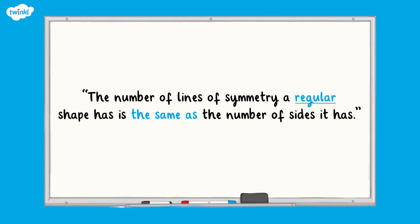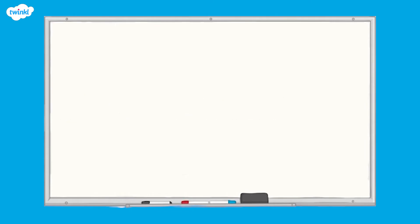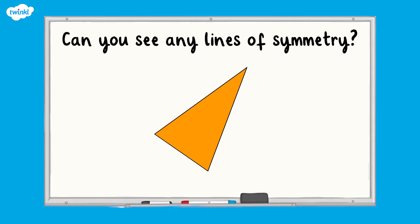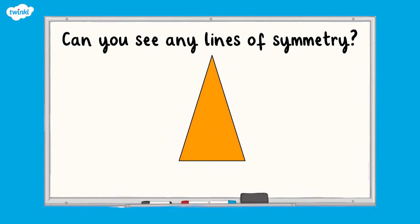Sometimes lines of symmetry may be tricky to spot in a shape as the shape itself is drawn in an unusual way. Take a look at this triangle — can you see any lines of symmetry? It's the same isosceles triangle from earlier in this video; the only difference is that it has been rotated. When we rotate it back to the same position as before, we can more easily see that it has a vertical line of symmetry. Top tip: sometimes you may need to rotate shapes when looking for lines of symmetry so that the lines of symmetry are easier to find.